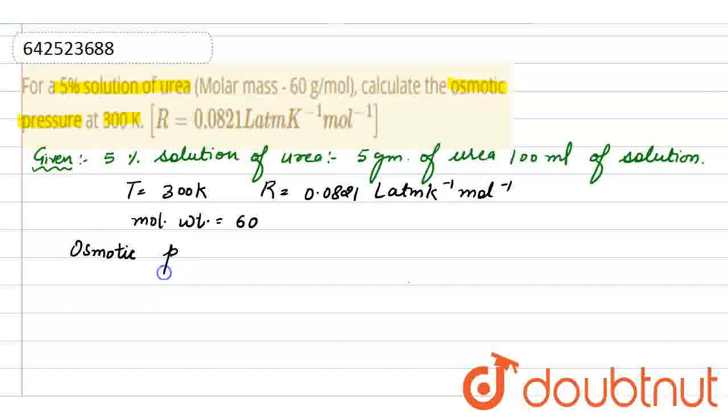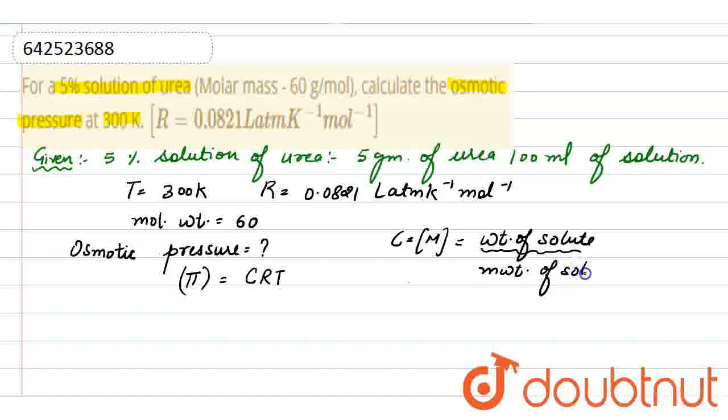Okay, we need to find the osmotic pressure of the solution. And what is the formula for osmotic pressure? We denote osmotic pressure by π, and it equals CRT, where C is the concentration, and we can say it is molarity, that is weight of solute divided by molecular weight of solute into volume of solution in liter.